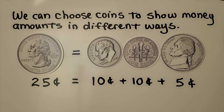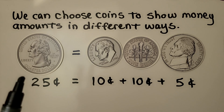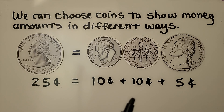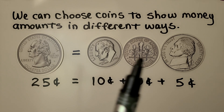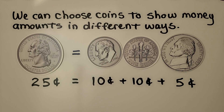We can show 25 cents as one coin using a quarter, or using three coins — two dimes and a nickel. Either way, we're showing 25 cents.